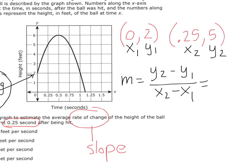So now let's do that. So I've got y2, which is 5, minus y1, which is 2, over x2, which is 0.25, minus x1, which is 0.